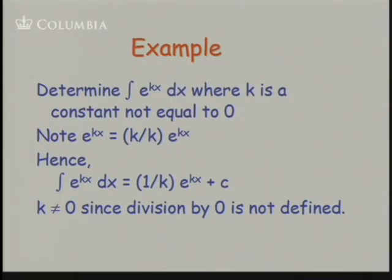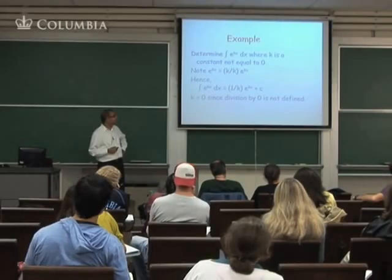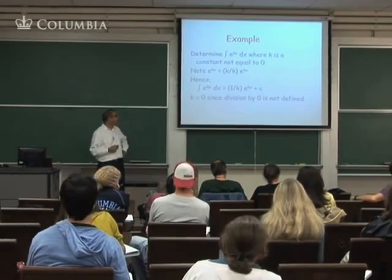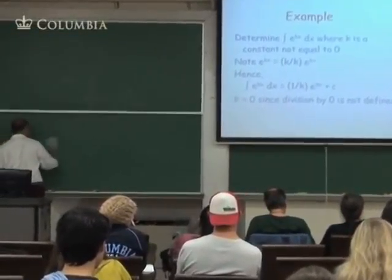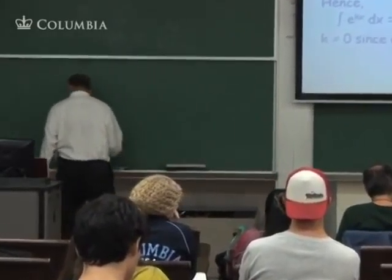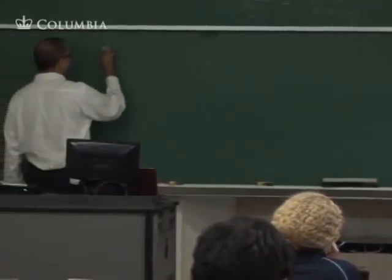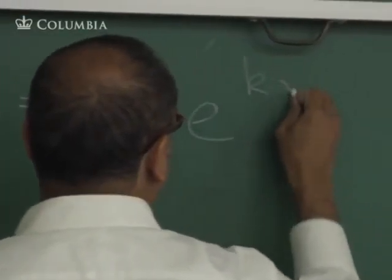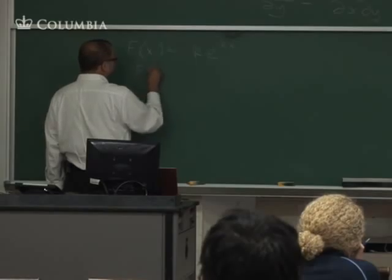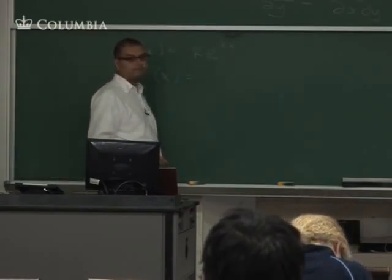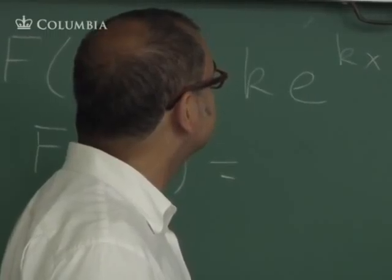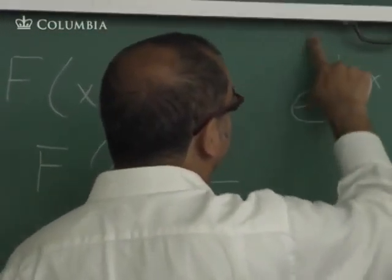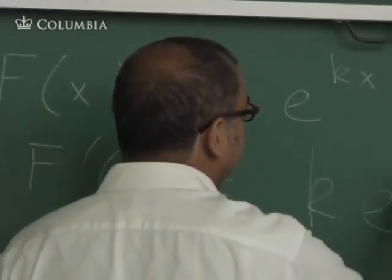Here we're not using the power rule. What was the derivative of e to the kx from the last session? If f(x) is e to the kx, then the derivative was k times e to the kx. That's right.